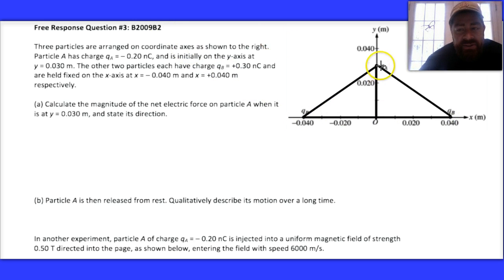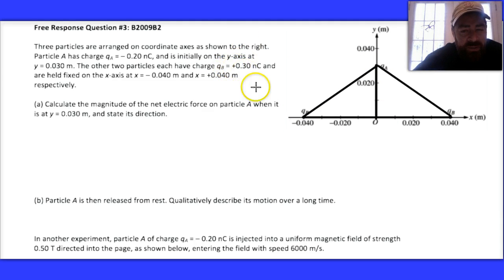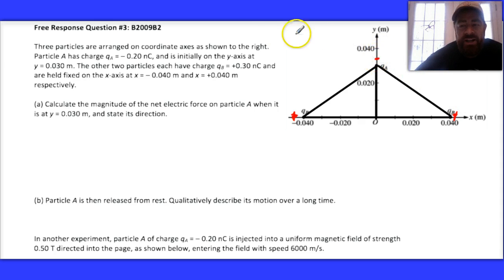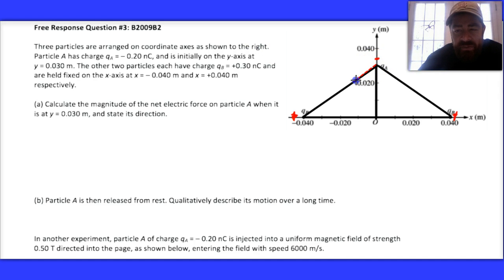Since QB is positive — these two charges are positive — and particle A is negative, we're going to have a force of attraction between A and the other charges. That means the force acting on A is going to be towards B along that line. Likewise, I'm going to have the mirror image of that — the exact same magnitude and relative angle.